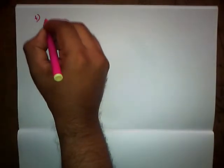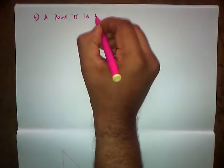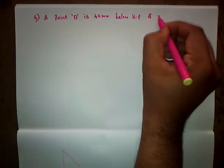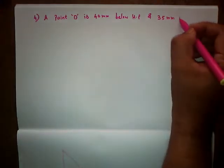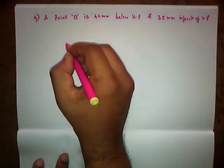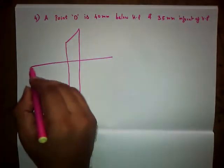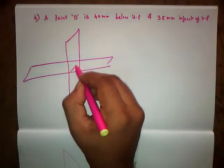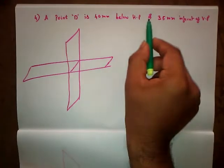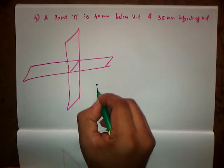The fourth one: point capital D is 40 mm below HP and 35 mm in front of VP. So this is the question we had. Let us take down the quadrants, the vertical plane and the horizontal plane — this is going to be our x-y reference line. According to the question, the point is 40 mm below HP and 35 mm in front of VP, so below and in front means it is going to be the fourth quadrant, and the point name is capital D.